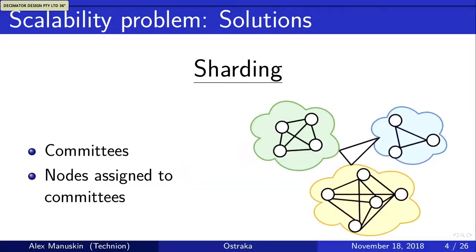One of the solutions you've heard a lot about today is sharding. This is what sharding generally looks like: there are committees, nodes are assigned to them, each committee runs its own sub-chain. Sometimes they need to interact with each other, giving us higher throughput, and nodes need to store less.